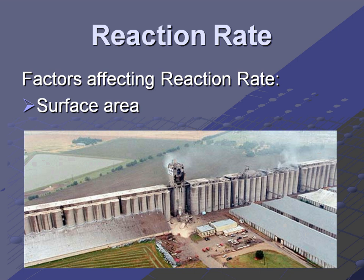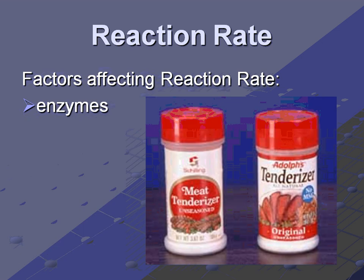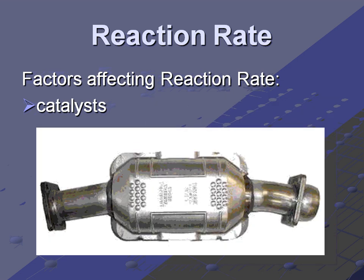We also discussed a metal powder factory where metal dust caused an explosion that killed some workers. Inhibitors are another factor — an example in everyday use would be preservatives in food. You can see that the decomposition of diner fries occurred quite quickly compared to McDonald's fries with preservatives. Enzymes are chemicals used to affect a reaction — for example, meat tenderizer accelerates the decomposition of meat to make it more tender.